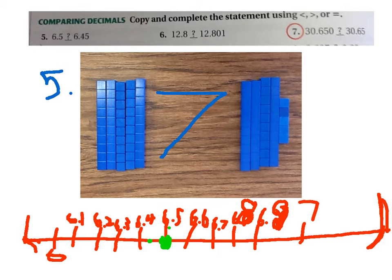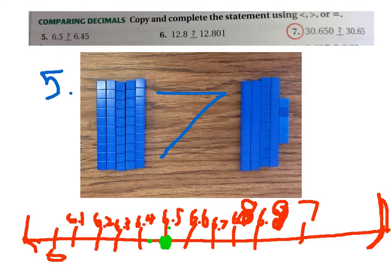Circle them — show me where six point five is. Six and five tenths, where's six and forty-five hundredths? And why is six and five tenths greater? Because it's closer — closer to the seven.